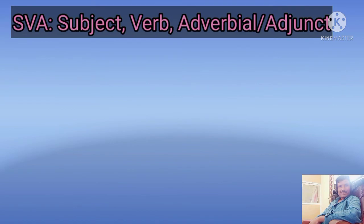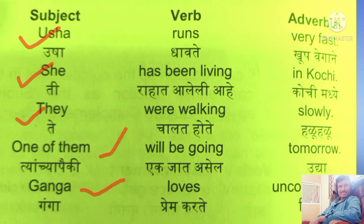Now let us understand the fourth basic clause type, S-V-A, which means subject plus verb plus adverbial. An adverb phrase or prepositional phrase can function as adverbial in the sentence, and a noun phrase can also function as adverbial. Examples of adverbials include: very fast, in Kochi, slowly, tomorrow, and unconditionally.